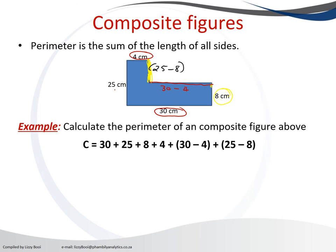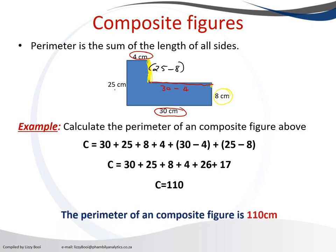And if we work out what is inside the brackets, 30 minus 4 is 26, and 25 minus 8 is 17. Therefore, 30 plus 25 plus 8 plus 4 plus 26 plus 17 will give us 110. That's the perimeter of the composite site, and it will be 110 centimeters. Thank you.